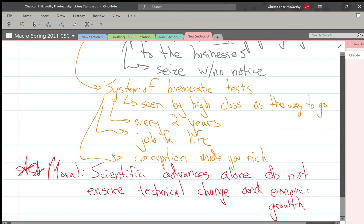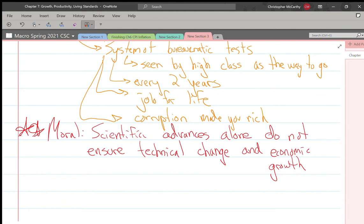The moral of this story is that scientific advances and economic advances alone do not ensure technical change and economic growth. Which leads us very nicely into what were they missing? What was one of the big things they were missing?